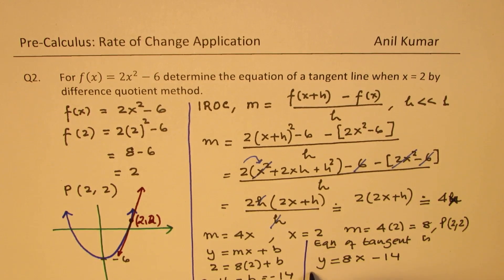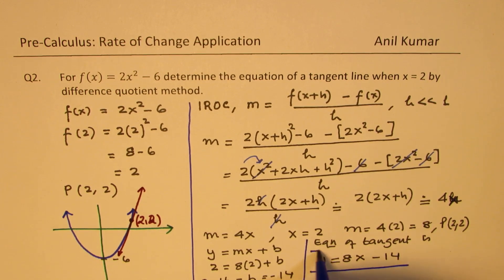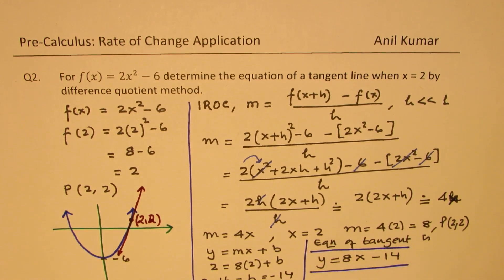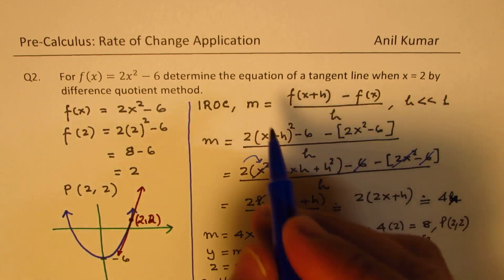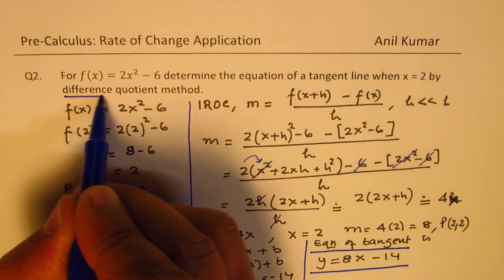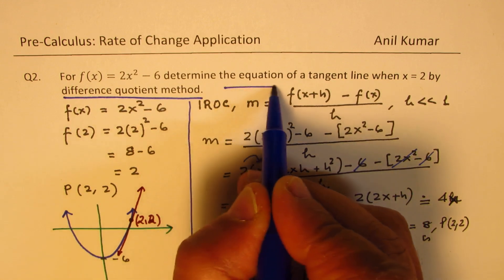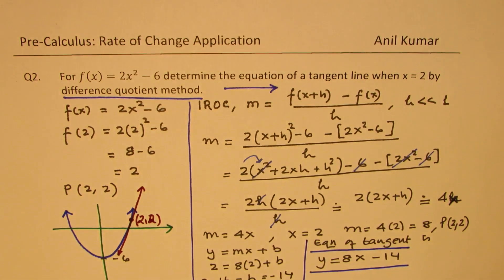So I hope that makes sense. The steps are very clear. Find the point first by substituting x = 2 in the equation, and then using this difference quotient method. This is what difference quotient method is. Using difference quotient method, you can find general solution. You could have placed 2 there and also calculated the value.